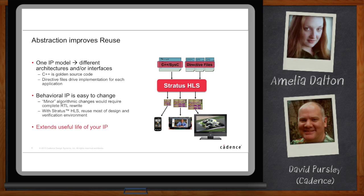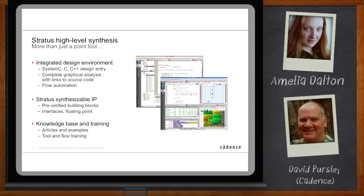Beyond the high-level synthesis tool itself, there's also a design environment around it that lets you specify your SystemC, C, or C++, debug it, look at it, and automate the flow. Cadence also provides IP you can directly synthesize, and there's a knowledge base built up over 15 years — hundreds of articles, tips, tricks, app notes, and best practices on how to best apply high-level synthesis to your production flow.